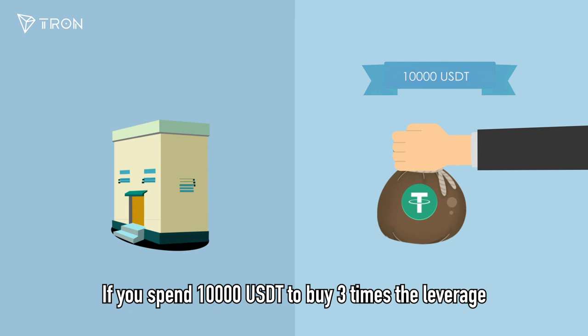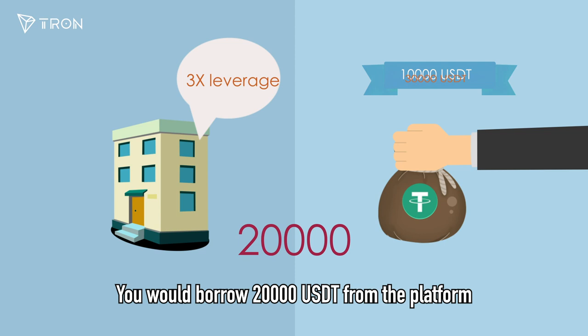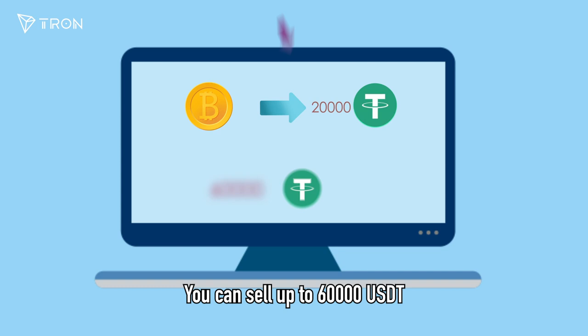If you spent 10,000 USDT to buy three times the leverage, you would borrow 20,000 USDT from the platform. So now you just spent 30,000 USDT to buy three bitcoins. When the price of bitcoin gets up to 20,000, you can sell for up to 60,000 USDT.